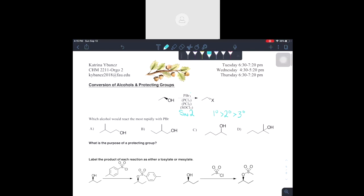So knowing that, let's go on to which alcohol would react the most rapidly with PBr3. And just so you guys don't get confused, PBr3, just in case you guys were like oh there's only one Br, there's three.